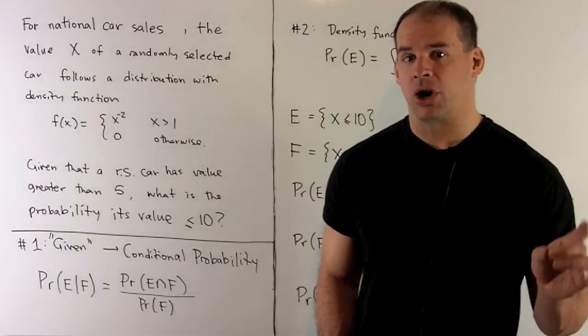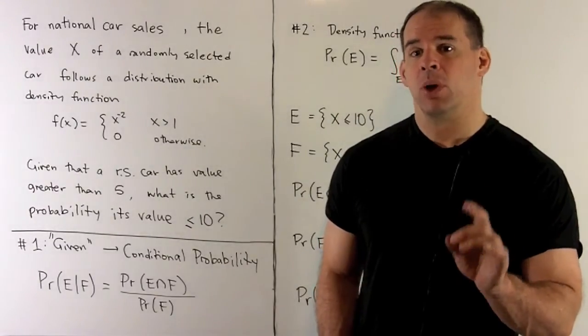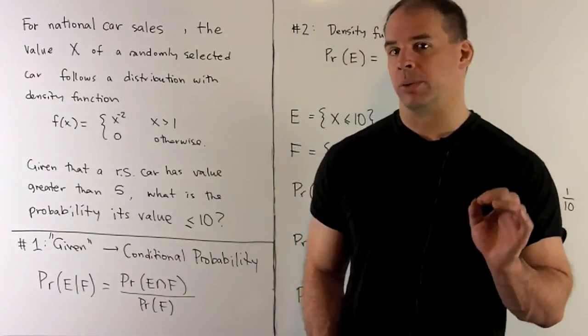Given that a randomly selected car has a value greater than 5, what's the probability that that car has a value less than or equal to 10?